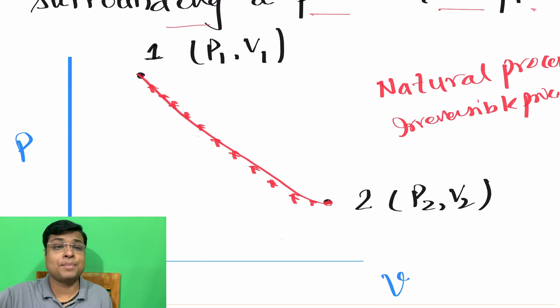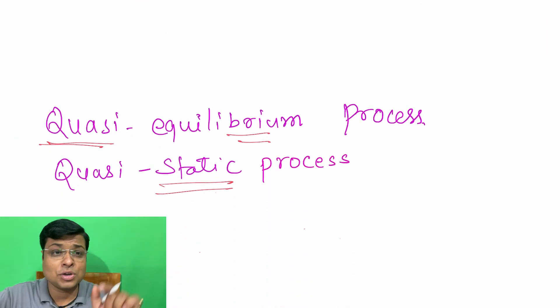So any reversible process must be quasi-static. Quasi means almost, quasi means almost, and equilibrium you know. So if the process is almost in equilibrium at each and every point, then the process is called as quasi-equilibrium process.